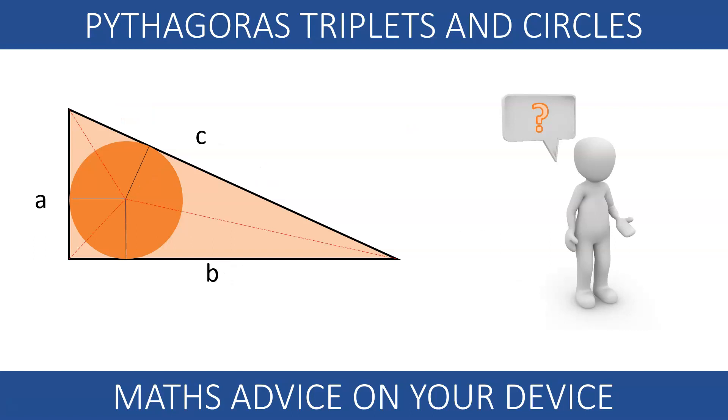So could we perhaps use this link to find the next Pythagorean triplet? Notice that the three red dashed lines divide our triangle ABC into three right-angled triangles with height the radius and base the sides A, B and C.